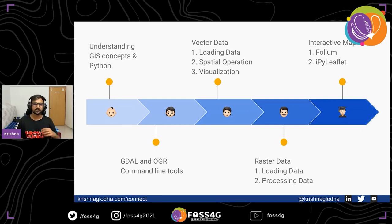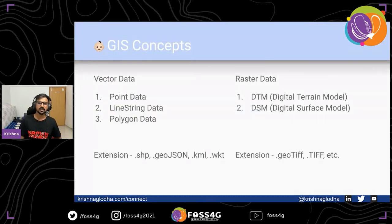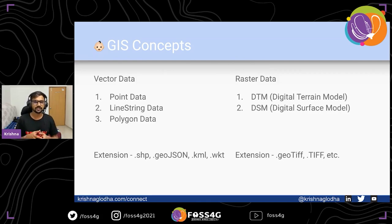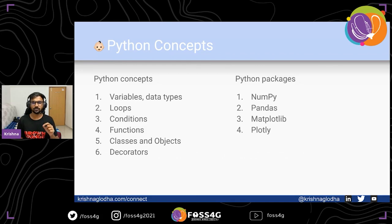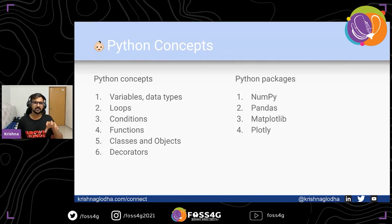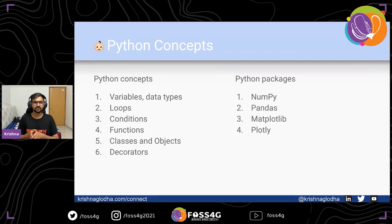We'll go through each of these roadmaps in the next 25 minutes. For GIS concepts, I don't think I need to spend much time — everyone understands vector data, raster data, and spatial operations. The next important stop is making sure you understand Python correctly: starting with variables, data types, lists, and dictionaries, then understanding functions and how to execute specific commands using functions and arguments, and how to connect this with loops to repetitively call functions on each piece of data. You can also learn about conditions to control how your Python code executes.